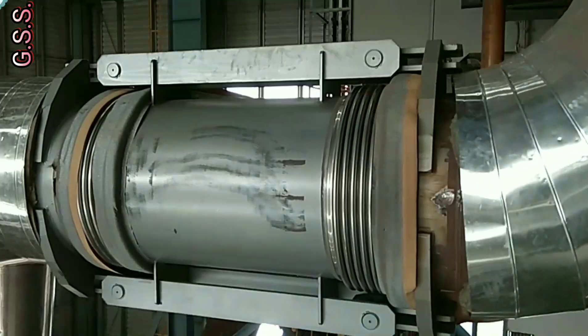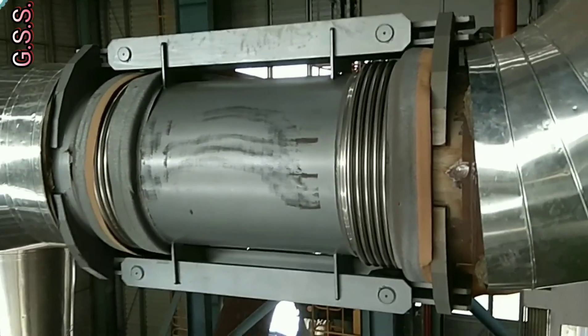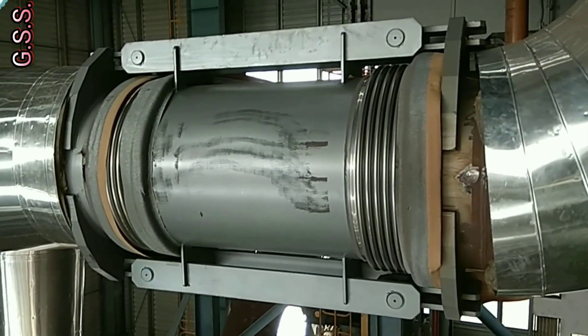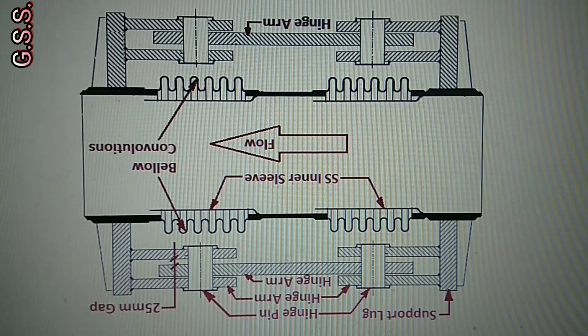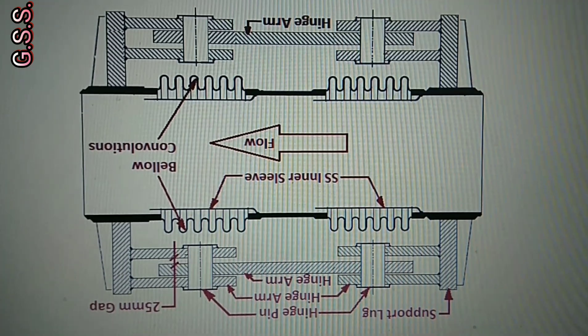Now we will see how this hinged universal lateral bellows works. This is the drawing of this 32 inch hinged universal lateral bellows.